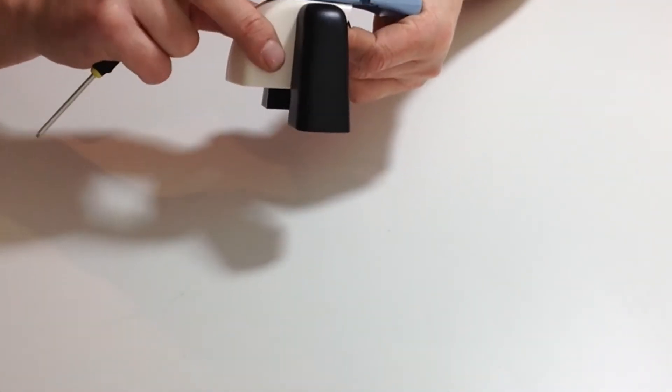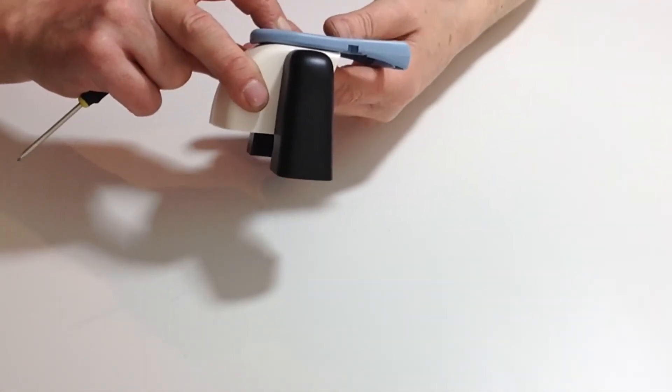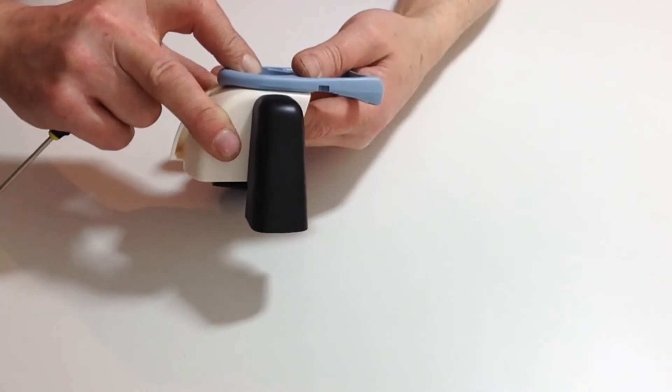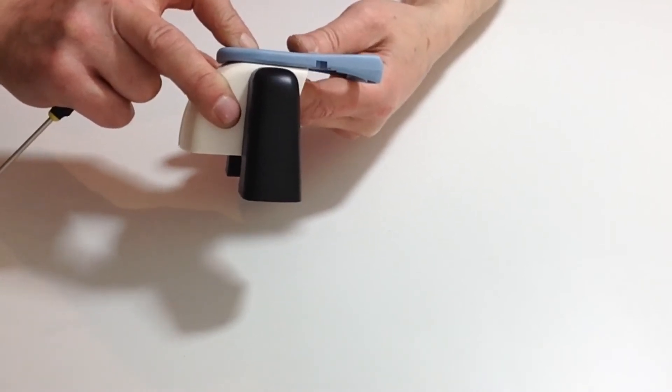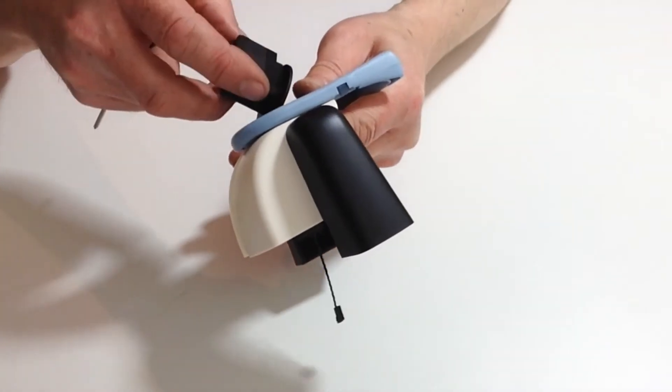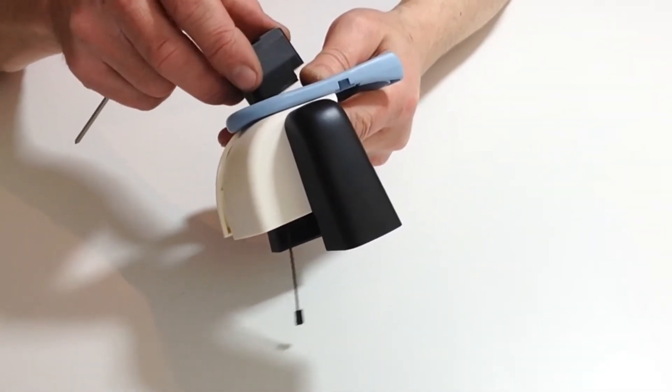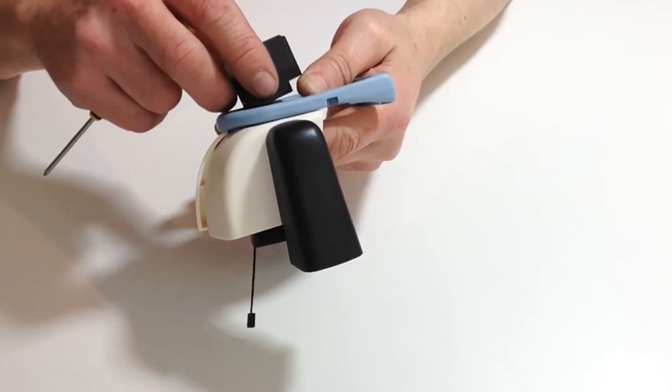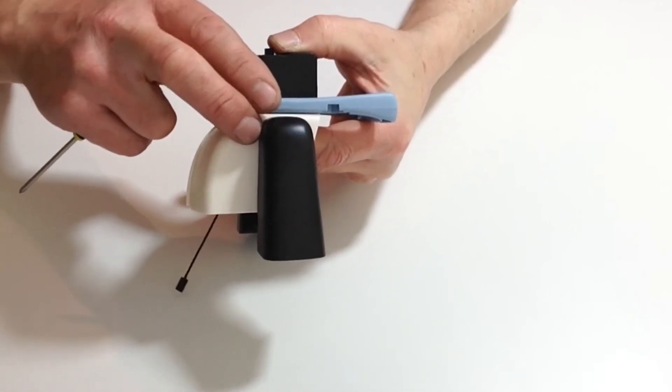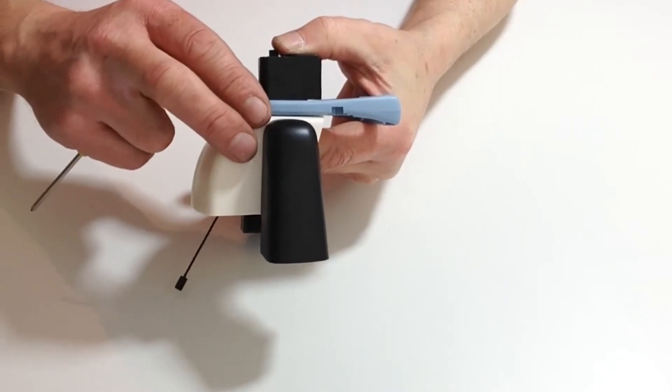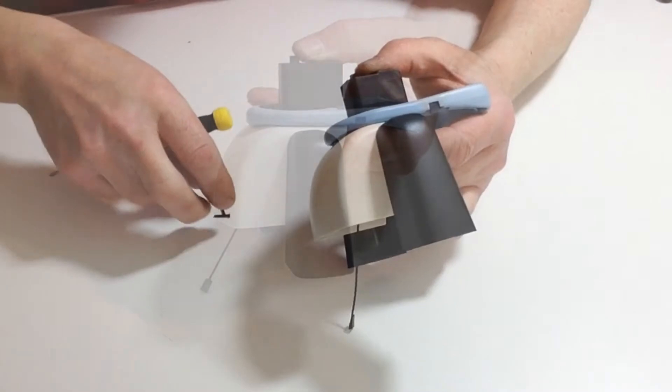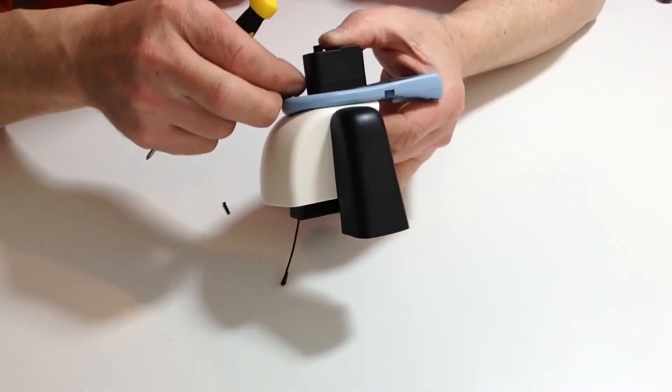Holding all the parts together, we're then gently going to take the servo unit, pass that through, and then using the countersunk screws, screw all that down into position. Once you've done that, take the remaining two M2 12mm countersunk screws.